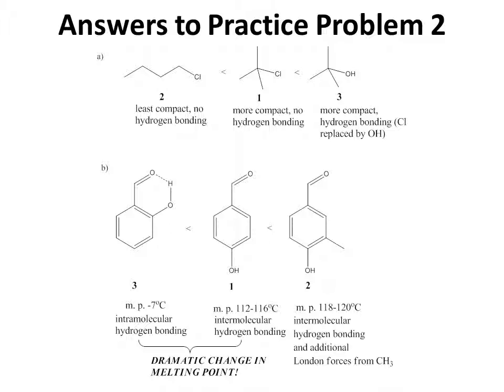In Part B, the lowest melting compound is 3 because of intramolecular hydrogen bonding — the OH is able to form a six-membered hydrogen bonded ring with the oxygen in C=O, preventing much attractive force between molecules and allowing only London and dipole-dipole interactions. Compound 1 has a much higher melting point because it has intermolecular hydrogen bonding, raising the melting point by over 100 degrees Celsius. Compound 2 is higher melting than compound 1 simply because of the additional methyl group, which adds a little more London force.